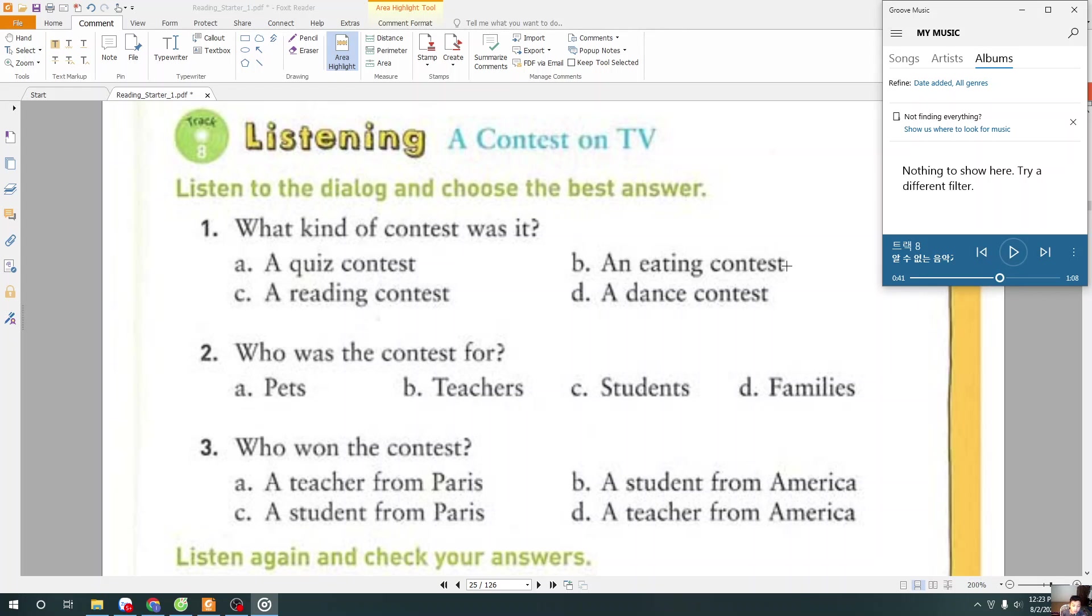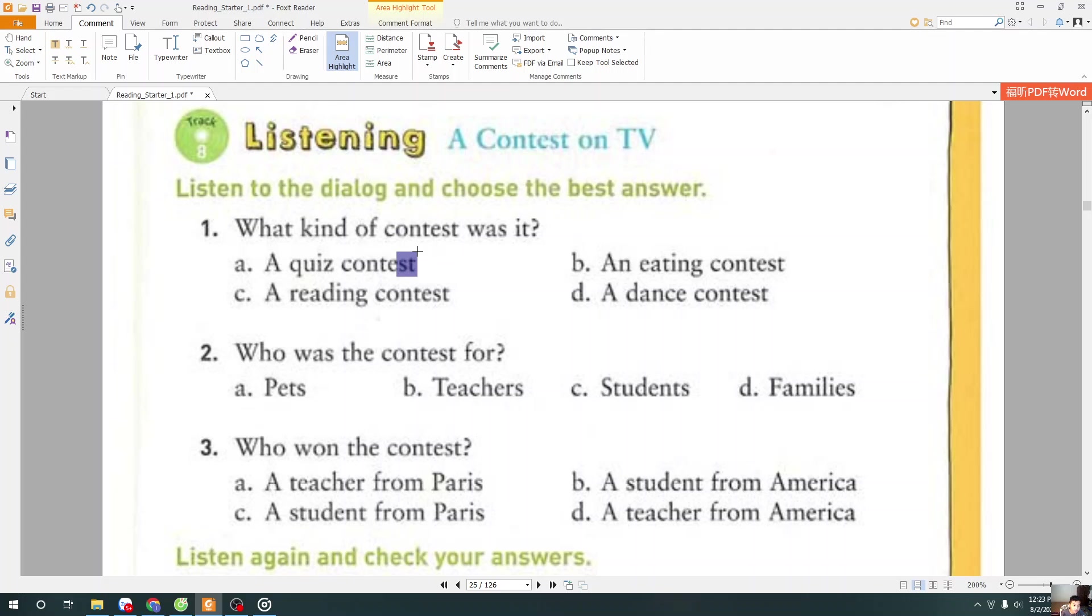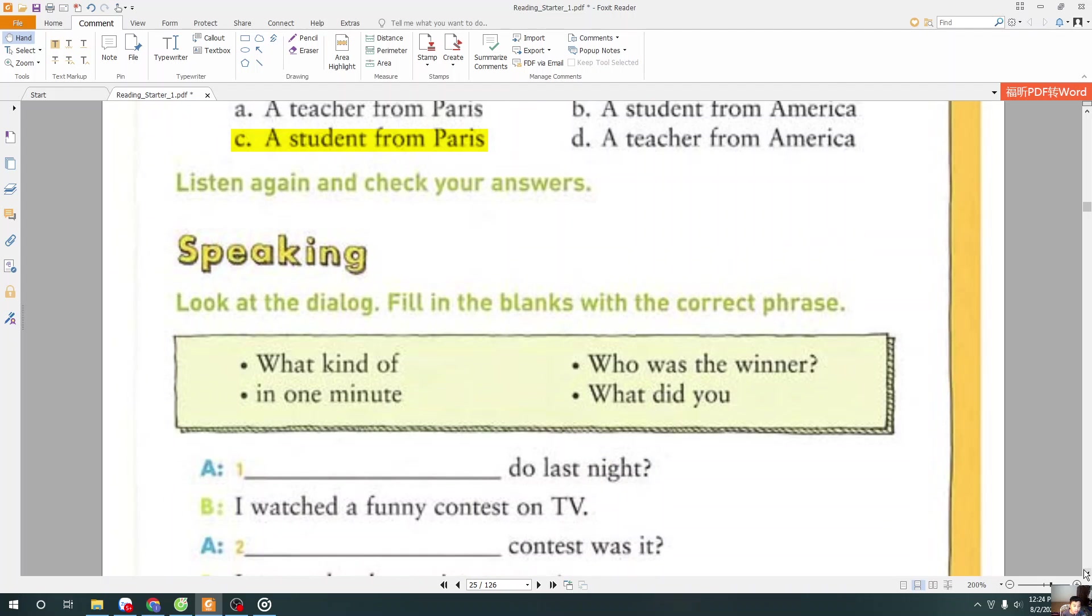And now we will choose the best answer. And question one. What kind of contest was it? I choose A, a quiz contest. And next question. Who was the contest for? I choose C, students. And question three. Who won the contest? I choose C, a student from Paris. And next exercise is speaking.